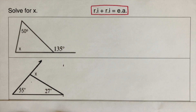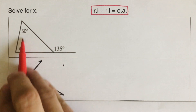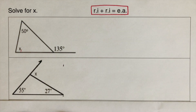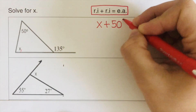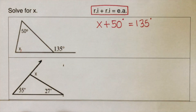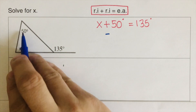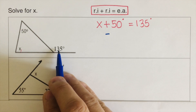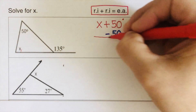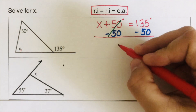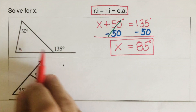Let's take the first problem. The two remote interior angles are x and 50 degrees. It doesn't matter which one you write first. So: x plus 50 degrees equals 135 degrees. I subtract 50 from both sides to isolate x. So x equals 85 degrees. This makes sense because 85 plus 50 is 135.